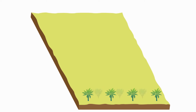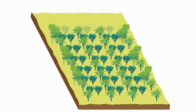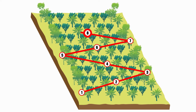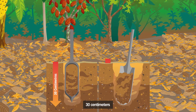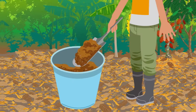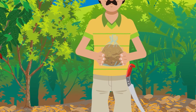We can know the fertility conditions of the cacao plantation by analyzing the soil through sampling. For the sampling, we must make a tour of the plot, defining at least 10 points per hectare. Using a soil auger or a shovel, we take the subsamples that represent the general conditions of the cacao farm. All the subsamples are placed in a container and mixed to obtain a 1 kg composite sample, which is sent to the laboratory for analysis.